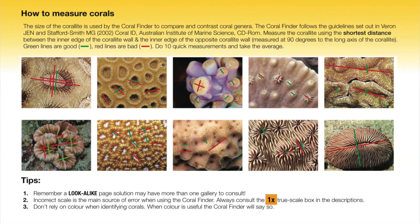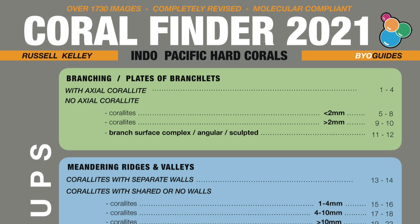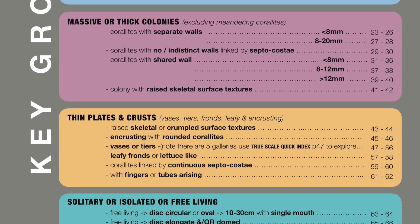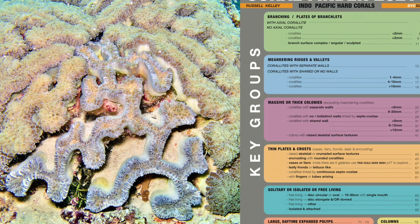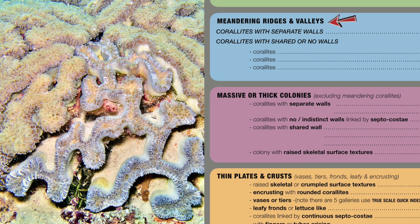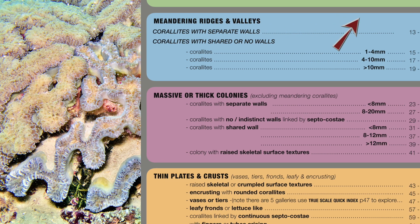There's a lot of other good stuff in these glossary pages, but this is all you need to get started. Finally, learn how and where to measure corals from this handy diagram. Now use the key page to search for a key group that matches our coral's shape, texture, or lifestyle. In this example we're going to use the meandering key group because our coral has clear river-like polyps. The Coral Finder now asks what kind of wall you have — clearly they're separated — and so we're off to look-alike page 13-14.